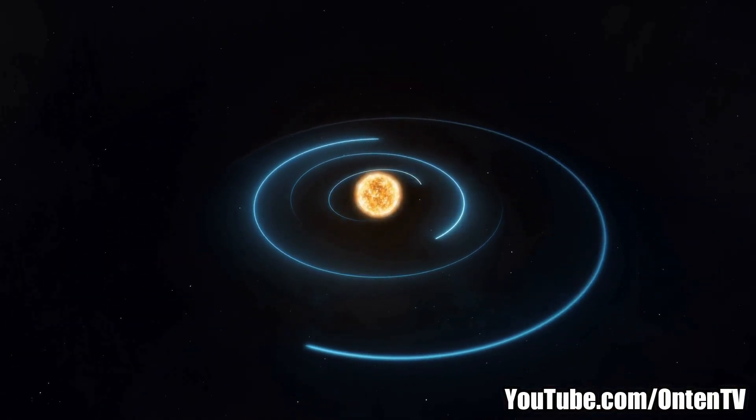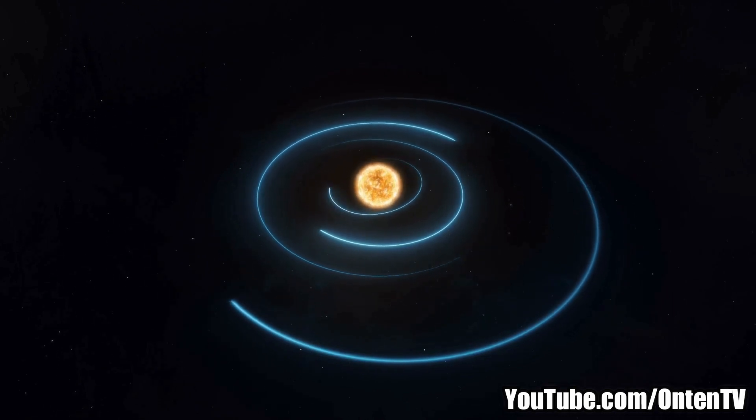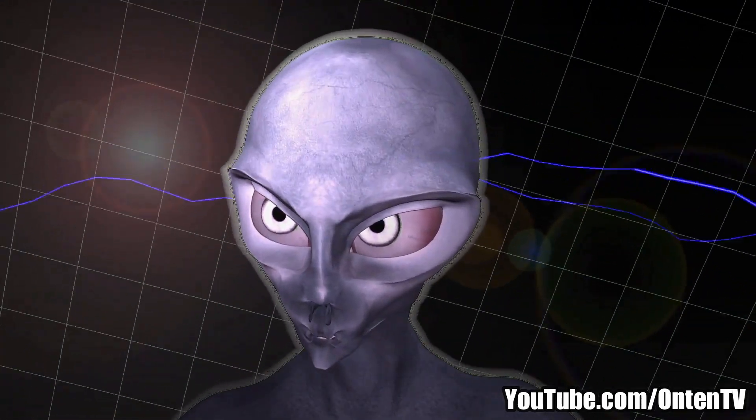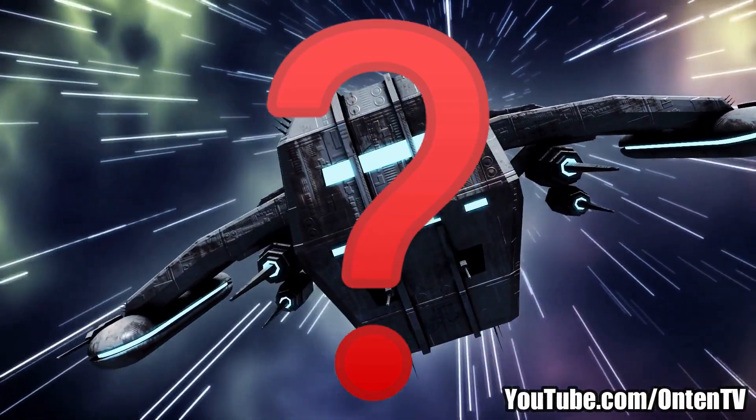So all these planets that are orbiting the stars, there should be alien life, right? But where are they? Why can't we see them?